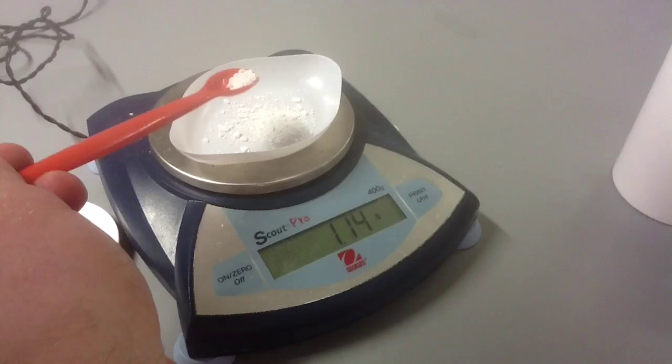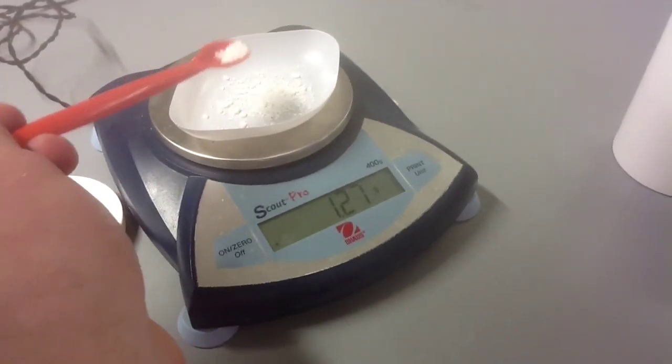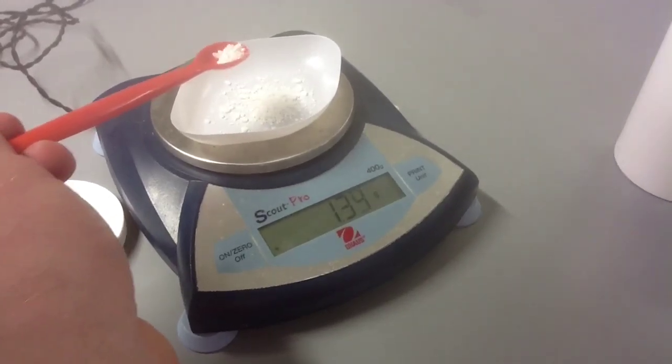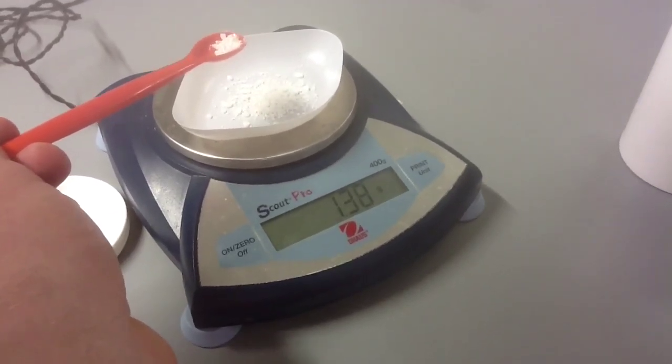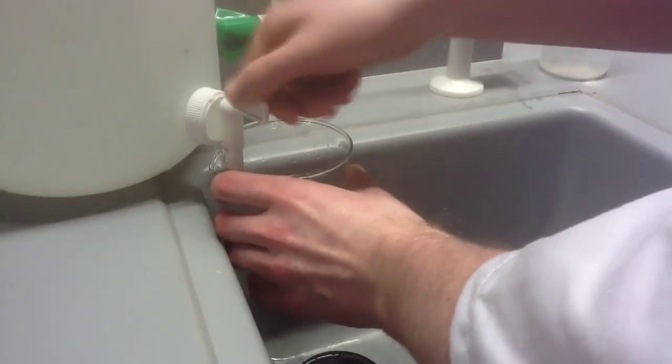Our next step is to get a solution with 1.4% calcium chloride. To do this we will weigh out 1.4 grams of calcium chloride and add it to 100ml of water. Our lab attendant does it again.